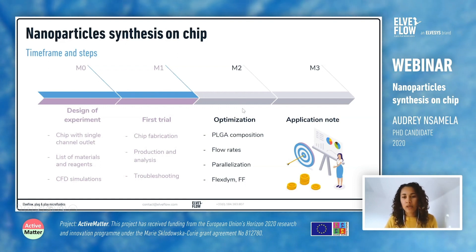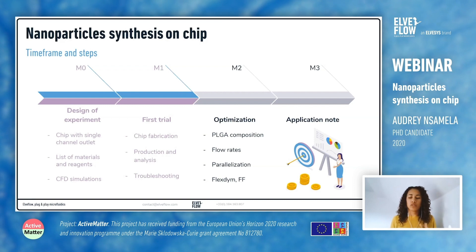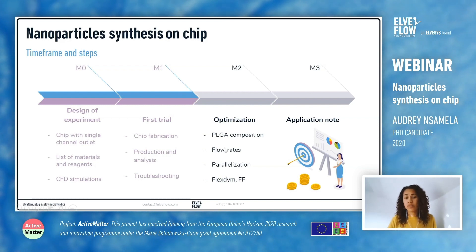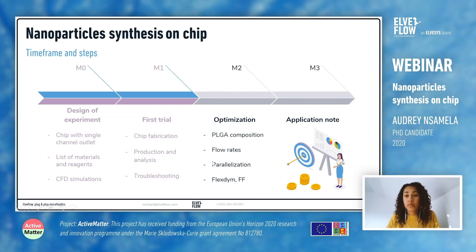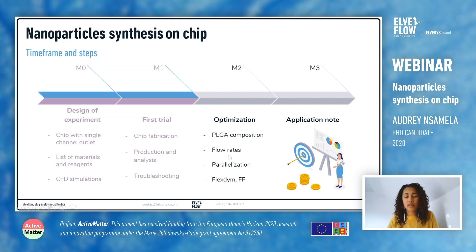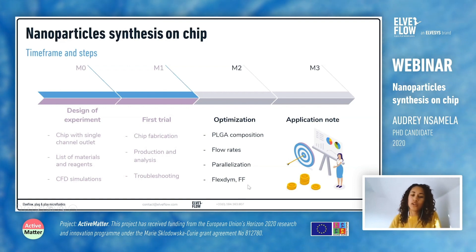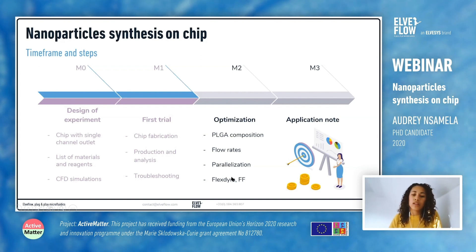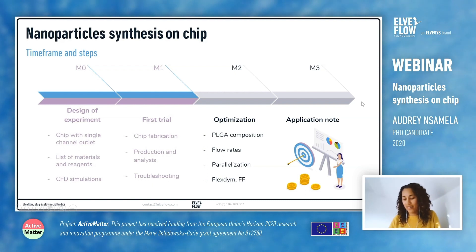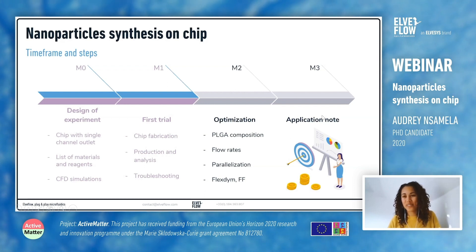At the next stage I will optimize my setup. I can play with the PLGA composition to have different sizes of nanoparticles and optimize the flow rates precisely. If everything goes well, I can also try to parallelize my setup to have higher production rates, which would be really good. With all that, I can write a nice application note, but it would also be nice to try different materials — here I will mainly use PDMS for the chip, but I could also use Flexdym and FluoroFlexdym, which I think would be a great thing to do. And then I'll write the application note — hopefully it will work and be useful for people.